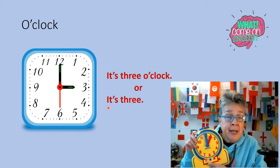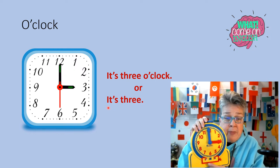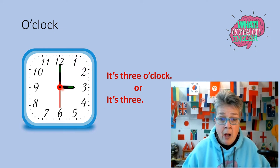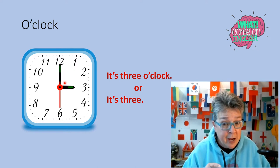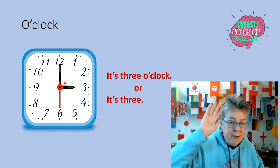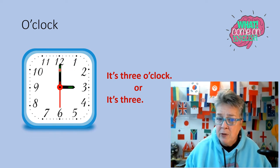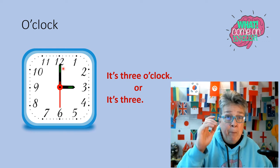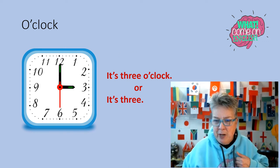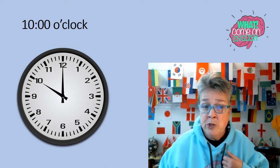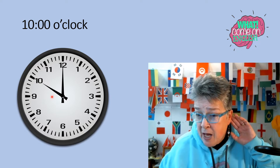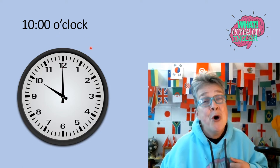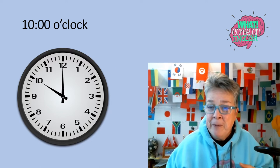It's three o'clock or it's three. Quick — the little hand goes to the what, hours or minutes? Did you say hours? High five! The big hand is on the twelve, and when the big hand is on the twelve, we say it's blank o'clock. Ten o'clock. The small hand tells us it's the hour, and the big hand tells us it's the minutes. When it's on the twelve, it's o'clock.